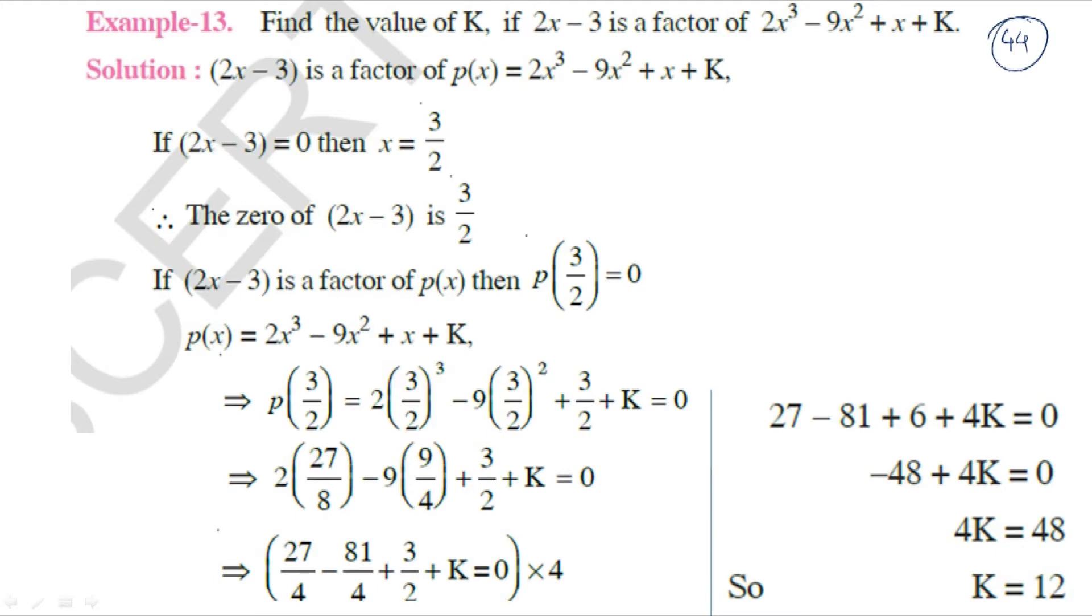The question asks: Find the value of K if (2x - 3) is a factor of 2x³ - 9x² + x + K.